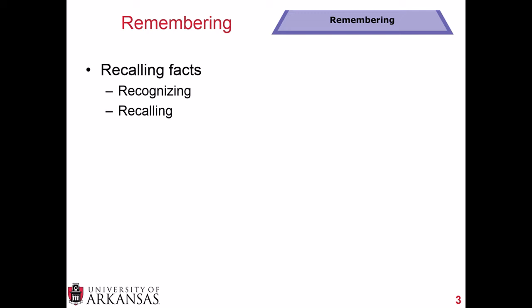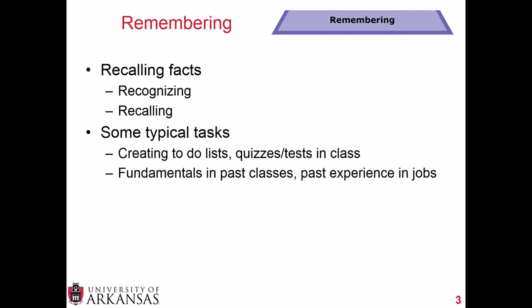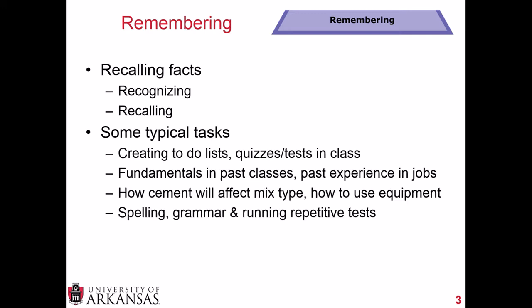A couple of years ago, I asked my research group to talk about tasks they felt fell under the remembering level, and this included creating to-do lists, taking quizzes and tests in class, recalling the fundamentals of information they learned in past classes, and the past experience they had in jobs. They talked about some things in the laboratory, for example, how Portland cement will affect different Portland cement concrete mix types — so just saying you have cement type A, B, and C, how will that influence the mix type? Also, steps on how to use equipment, and then finally things like spelling, grammar, and running repetitive tasks.